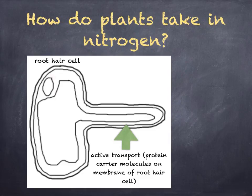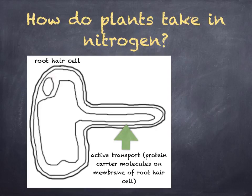Plants take in most of the nitrogen in the form of nitrates from the soil, and these are absorbed by active transport by the root hairs. Active transport requires protein carrier molecules, and these are found on the plasma membrane of the root hair cell — not in the cellulose cell wall, but on the partially permeable plasma membrane. Animals obtain nitrogen-containing compounds by eating and digesting plants.